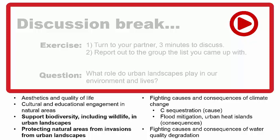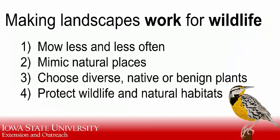Here are the four main takeaway points for making a landscape work for wildlife: we need to mow less and mow less often; we need to mimic natural places; we need to choose diverse native or benign exotic plants; and we need to protect wildlife and protect natural habitats — by which I mean natural areas away from our urban landscapes. I'm going to step through each one of these categories, show some pictures, and share thoughts about each step.